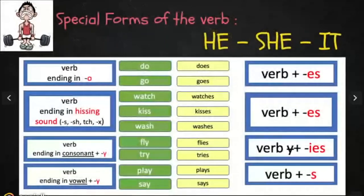There are some special forms of the verb when conjugating for he, she, and it. We will modify the verb and add ES if the verb ends in O. Do becomes does, and go becomes goes.